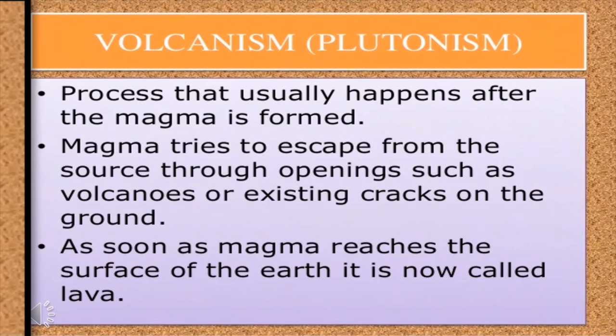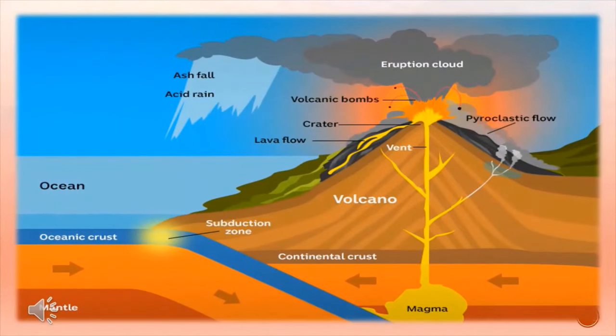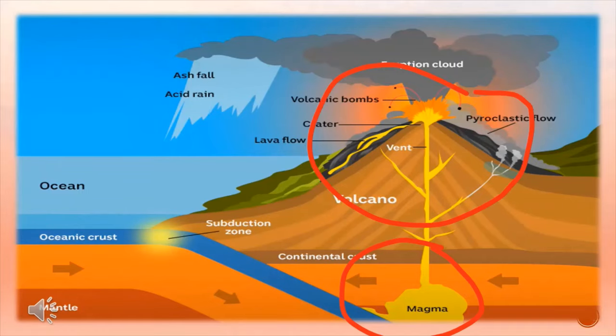The movement of magma from its source is called vulcanism or plutonism. Vulcanism is the process by which magma tries to escape from its source through openings such as volcanoes or existing cracks in the ground. As the magma reaches the surface of the Earth, it is now called lava. When this lava solidifies, extrusive igneous rocks are formed. This diagram shows both endogenic processes: magmatism and vulcanism.